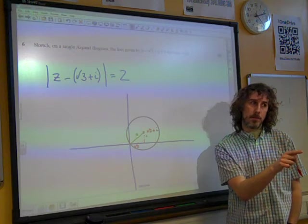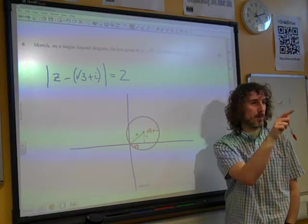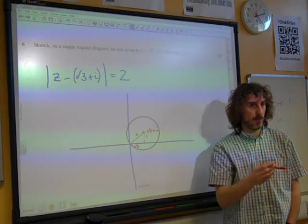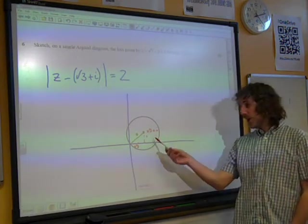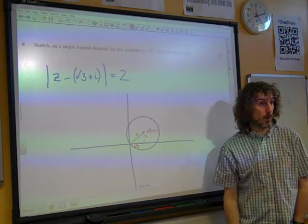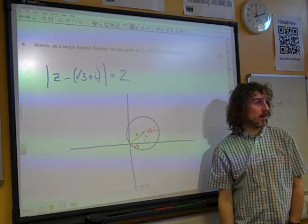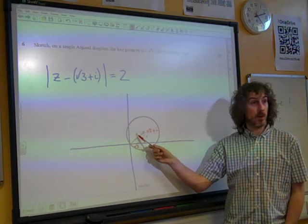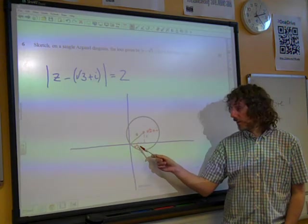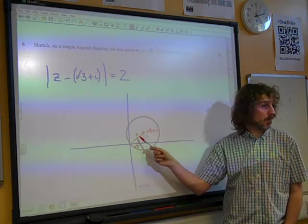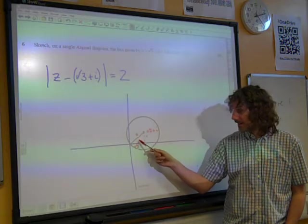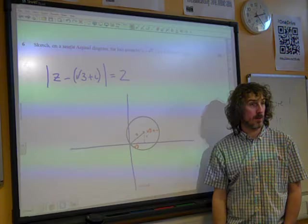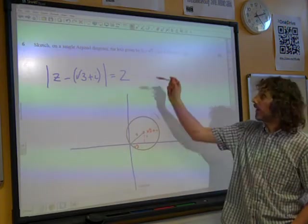Or maybe it doesn't. Sine of 30 is? That was a guess, wasn't it? It's a half. That's the other one. So cos of 30 is root 3 over 2. And sine of 30 is a half. Look at this little triangle that we drew. Opposite over hypotenuse is a half. Adjacent over hypotenuse is root 3 over 2. That angle in there is pi by 6.